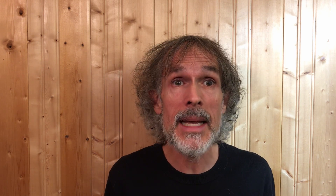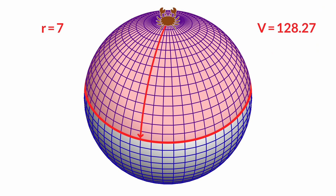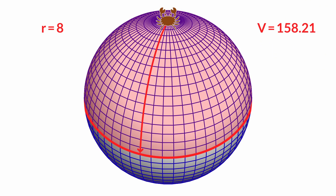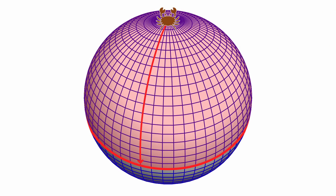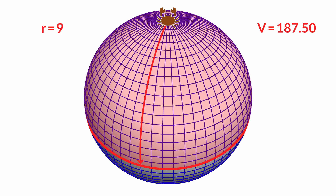And then things start to go seriously awry. Moving r = 6 crab lengths, the crab covers 98.98 crabs worth of space instead of 113.10. Moving r = 7 crab lengths, it covers 128.27 instead of 153.94. Moving r = 8 crab lengths, it covers 158.21 instead of 201.06. And by the time the crab is moving r = 9 crab lengths, it's covering over 25% less space than the formula v = π r² predicts — 187.50 crabs worth instead of 254.47. The crab is perplexed.